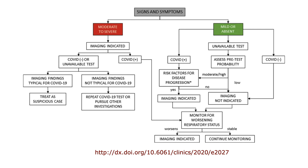Suppose a patient is moderate to severe and COVID-positive — we monitor the worsening of respiratory status. If stable, we may not do a CT; if it worsens, we do one CT scan. If COVID is negative but we are suspicious of COVID-19, in mild or absent symptoms we may go for a CT scan. If COVID-negative, we may not do CT unless there is worsening.